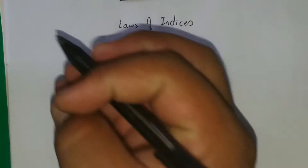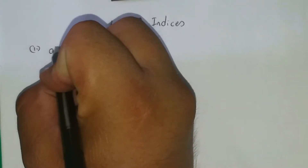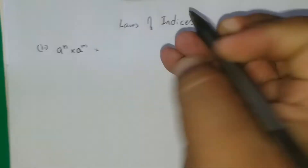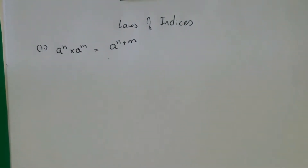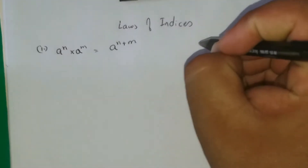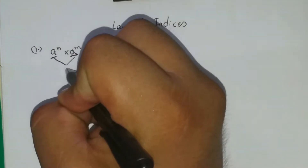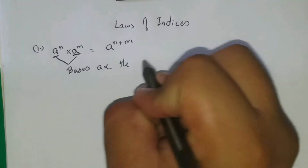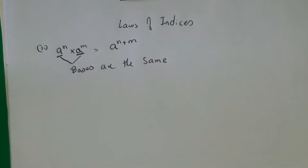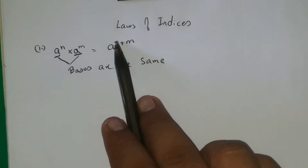In total we have around six laws of indices. The first one is: a to the n times a to the m equals a to the n plus m. This is telling you that if the bases are the same, then what we can do with the powers or exponents is add them, and our result is whatever we get after adding the two exponents.